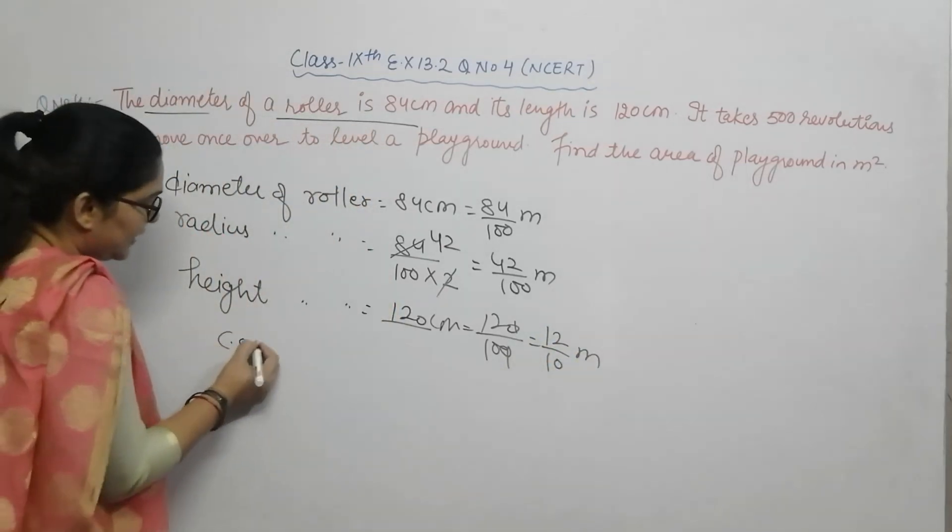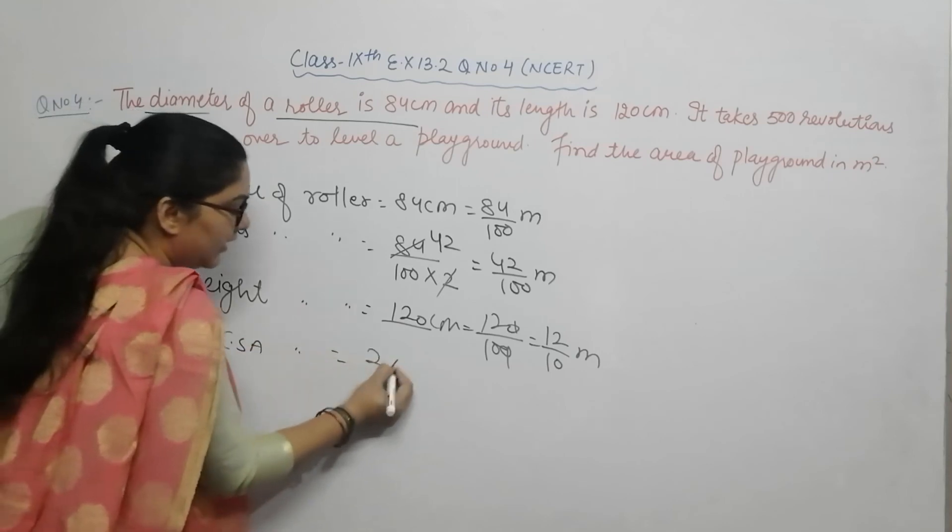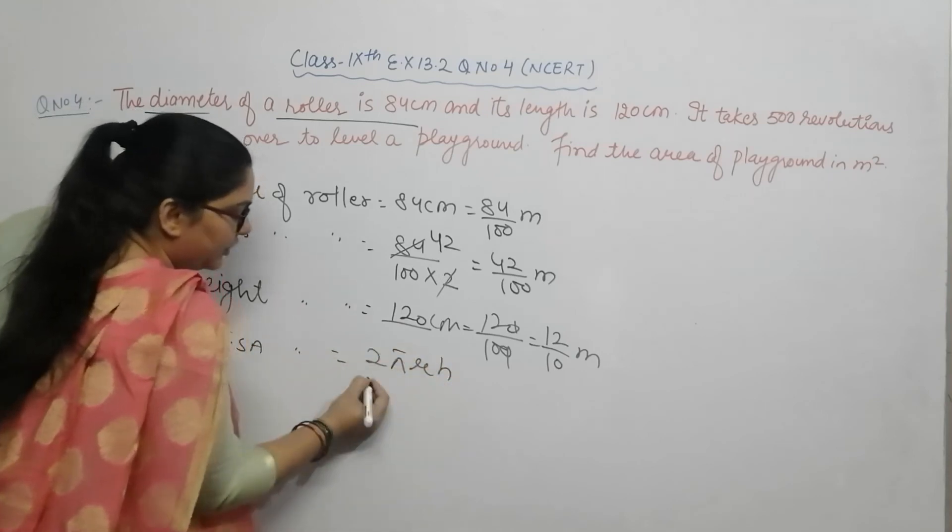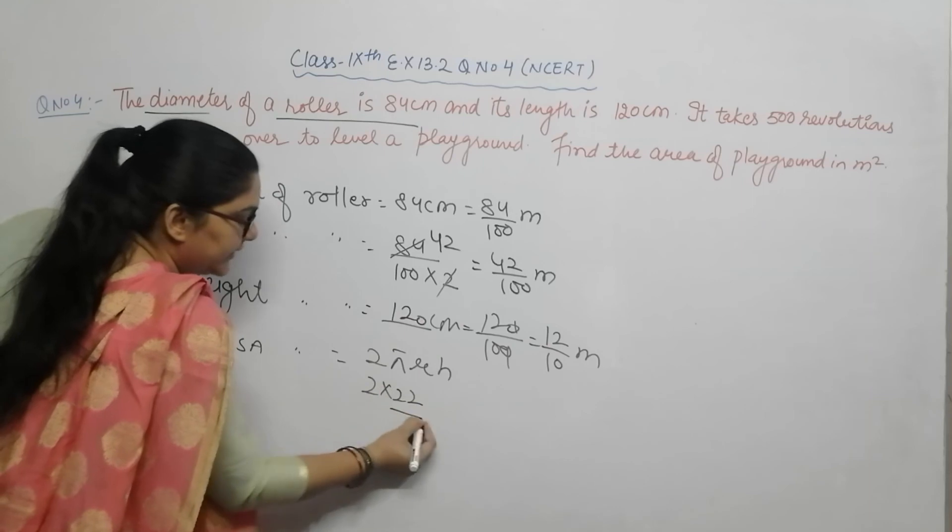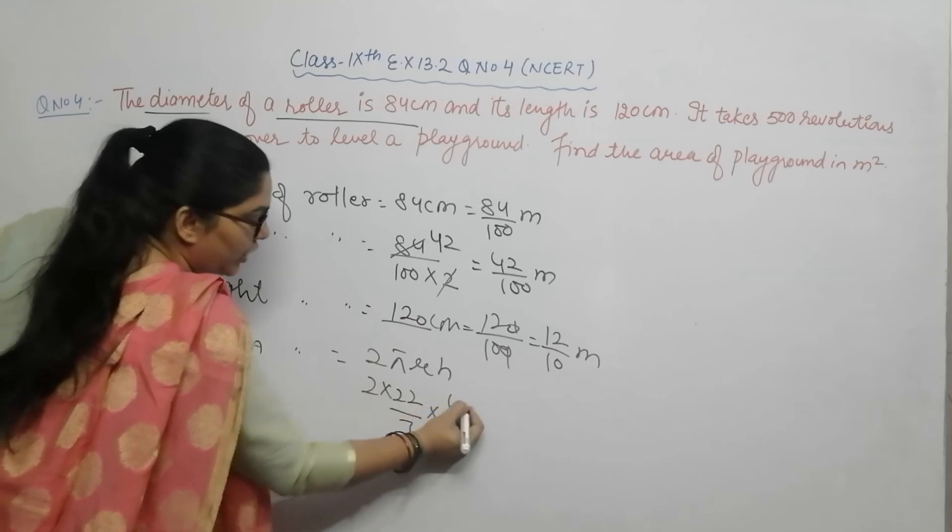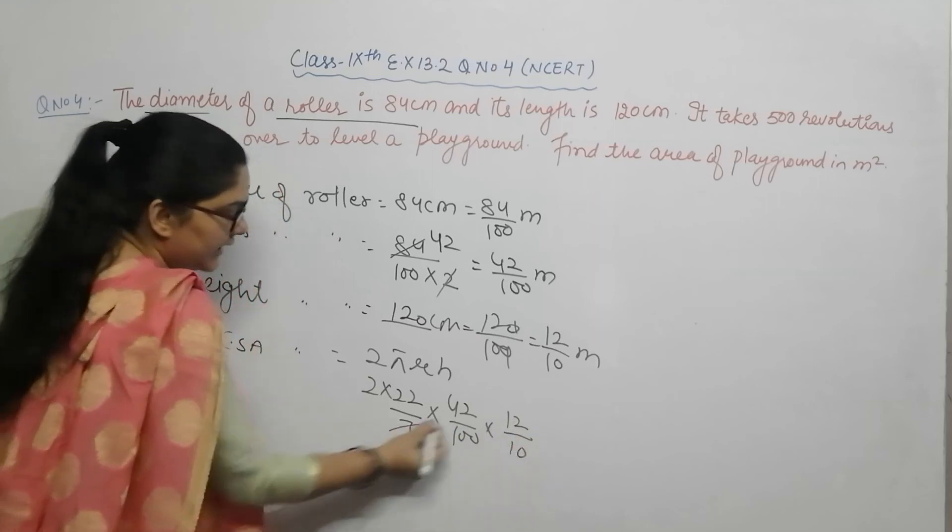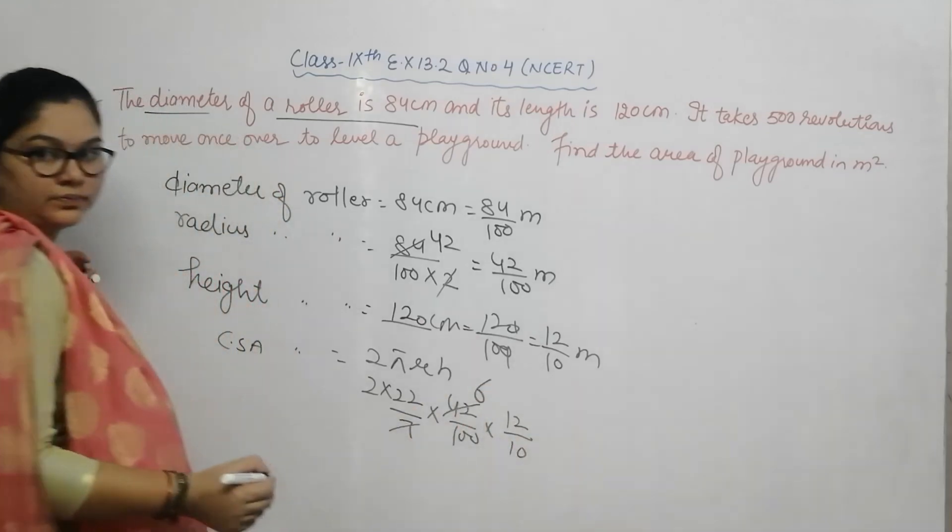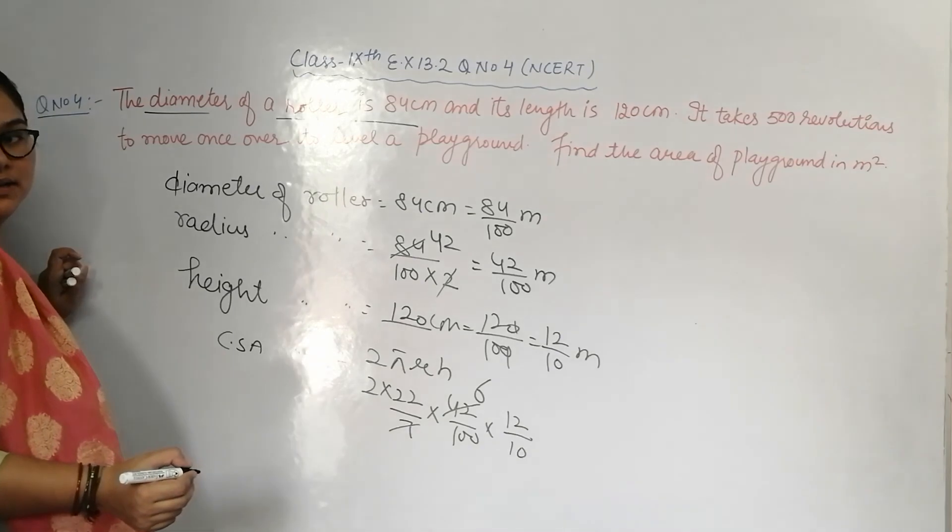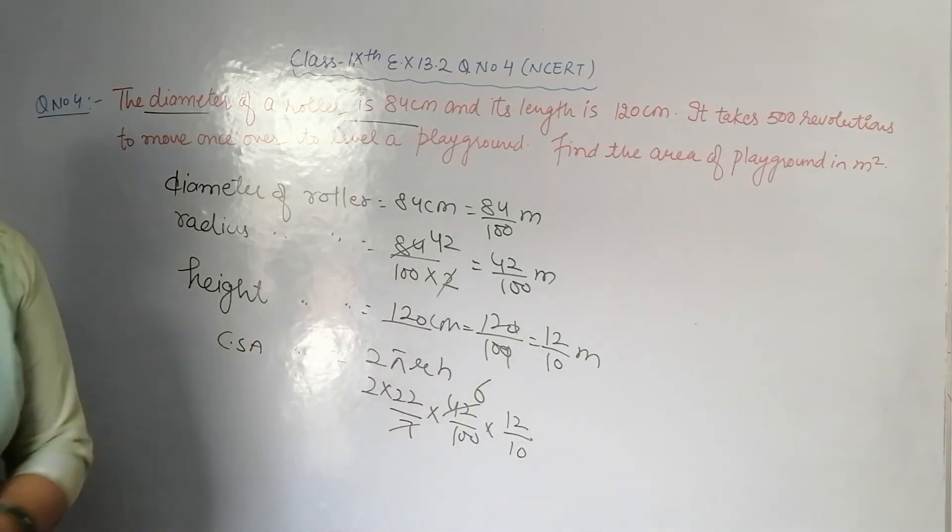Now we have to find the CSA of the roller, which is 2πrh. That equals 2 into 22 by 7 into 42 by 100 into 12 by 10. Canceling 7 and 42 gives us 6...